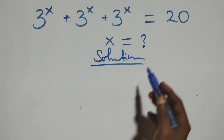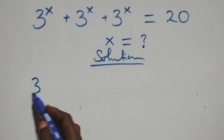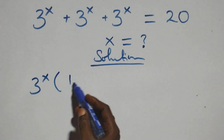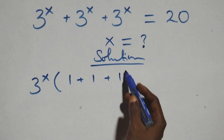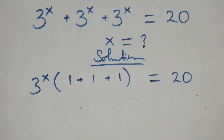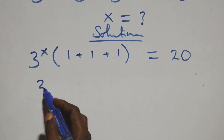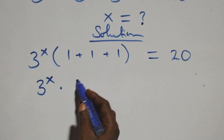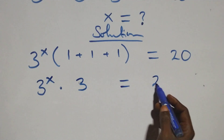What we have here: we factor 3 raised to power x out. So we have 3 raised to power x into brackets, 1 plus 1 plus 1 left here, which equals 20 on this side. This is the same thing as 3 raised to power x times 1 plus 1 plus 1, which is 3, then equals 20.